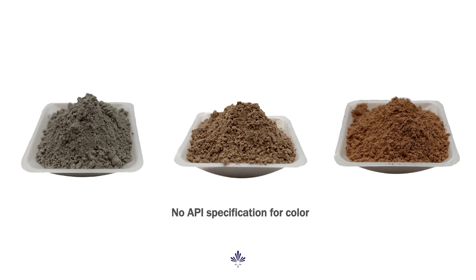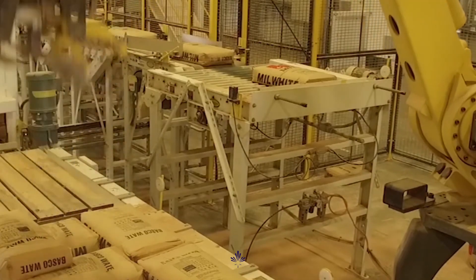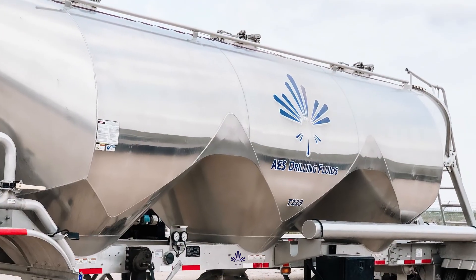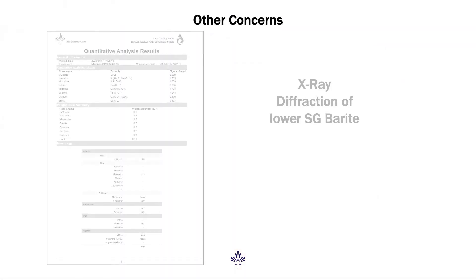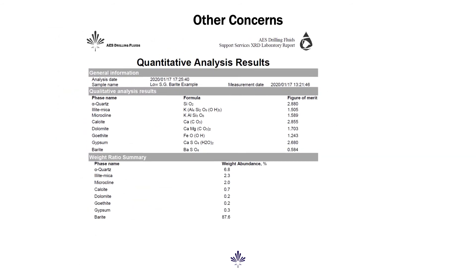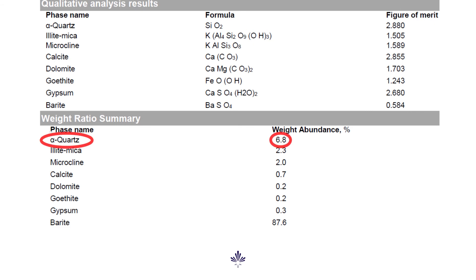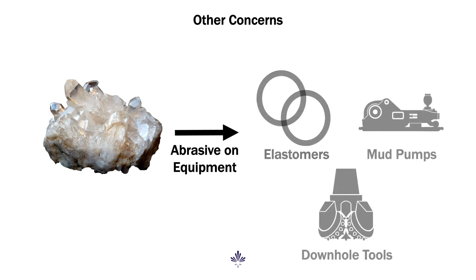Finished Barite is available as sack material, but its preferred conveyance method is pneumatic transfer, particularly with heavy mud weights. Another concern is not the Barite itself, but the other material that lowers the overall specific gravity. Studies have shown that much of the non-Barite material is quartz, which is highly abrasive, increasing the risk of damage to equipment, among other concerns.